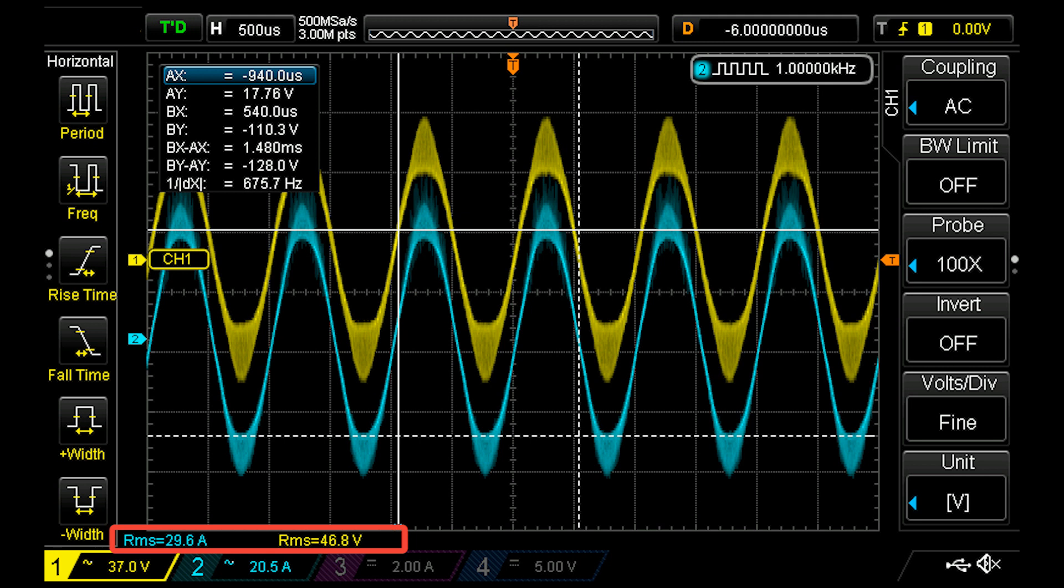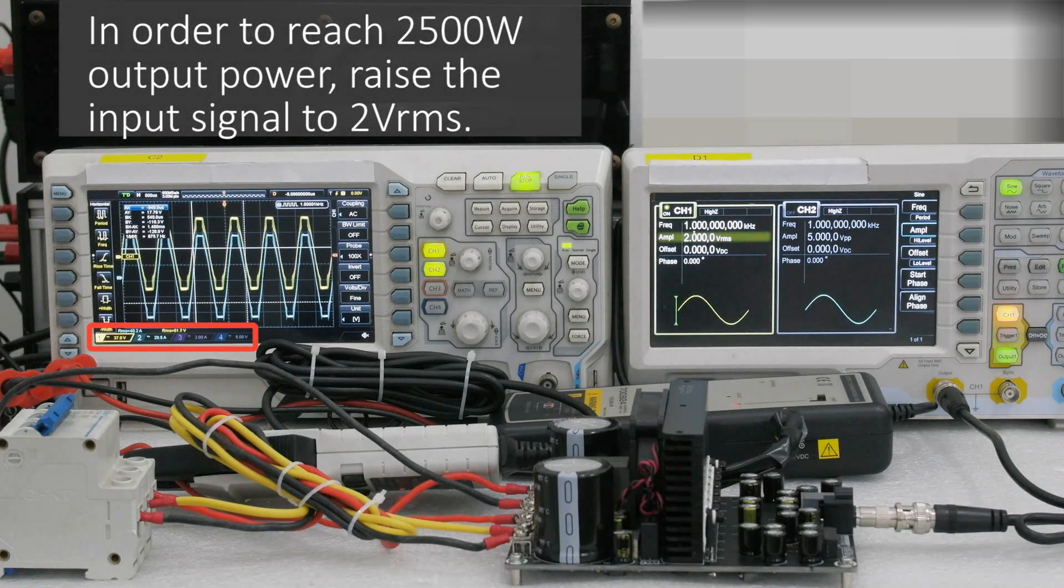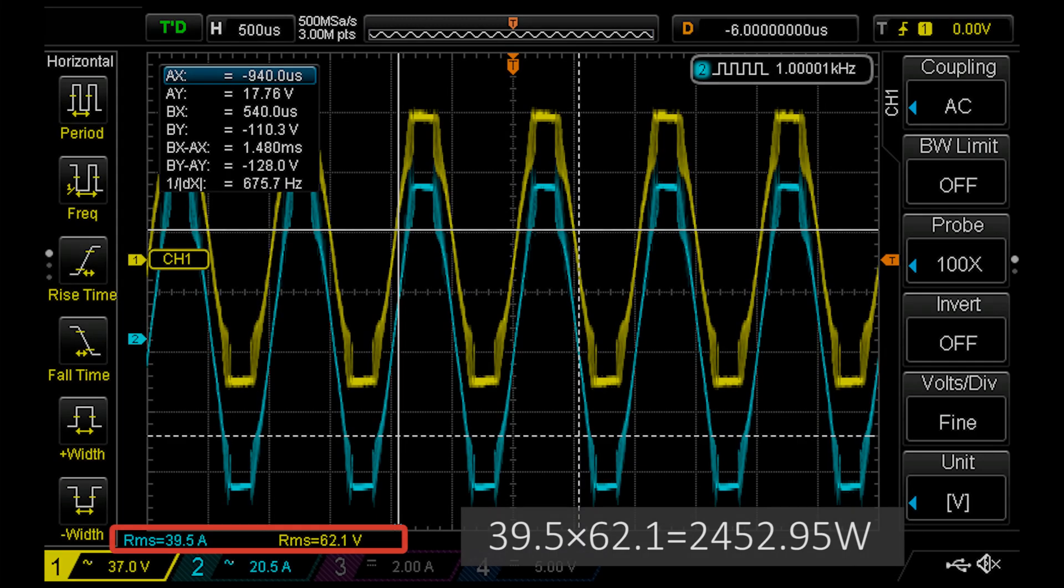Next, we will raise the input signal to 2V RMS. The output voltage is 62.1V, the output current is 39.5A, and the power is 2452.95W. At this point, we can see from the output waveform that distortion has occurred. THD plus N equals 10%.